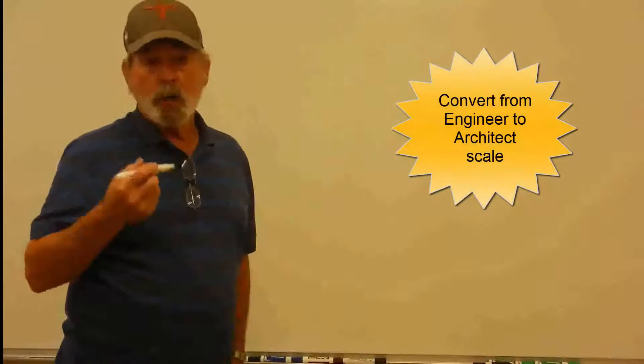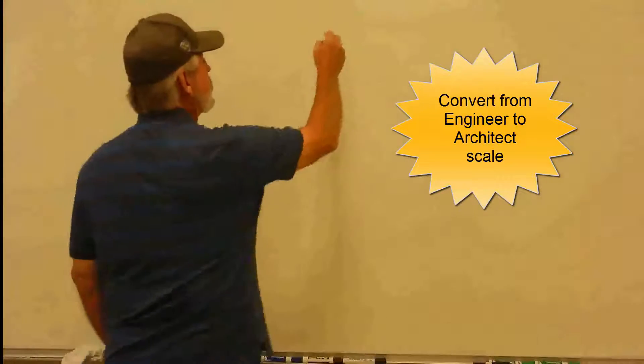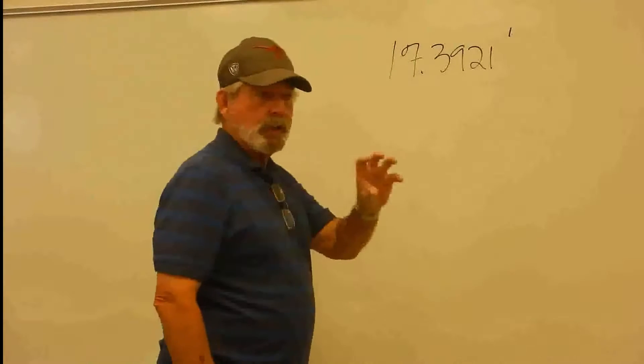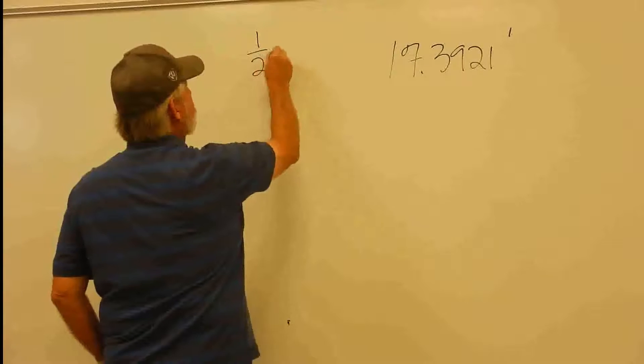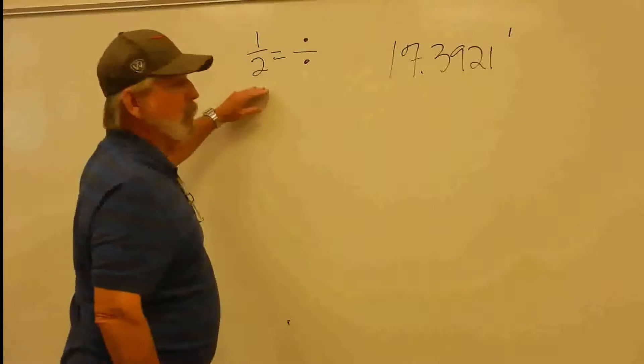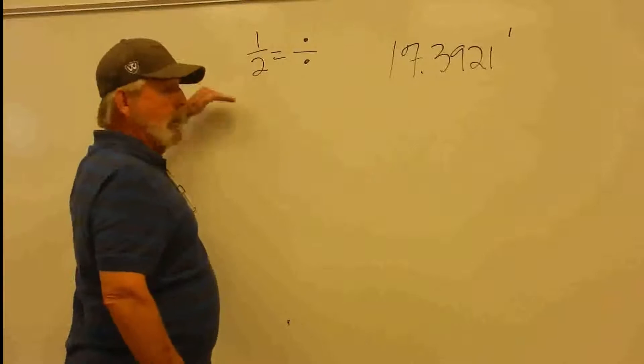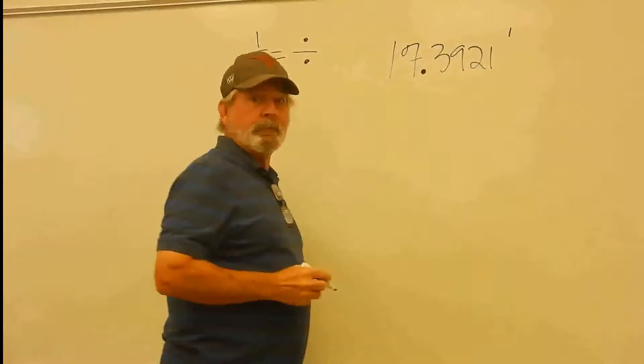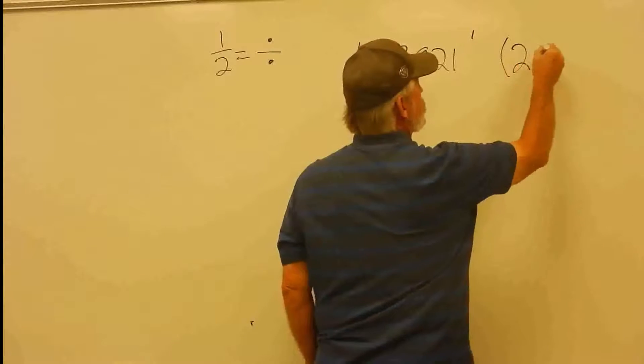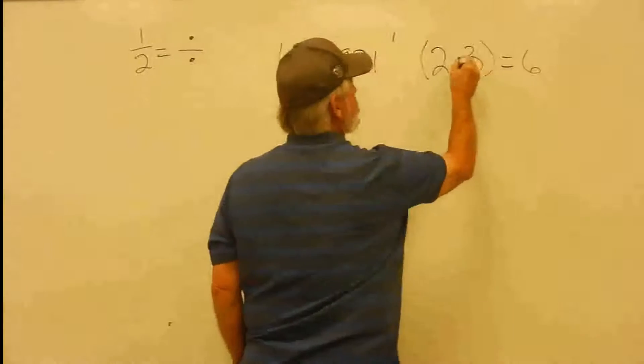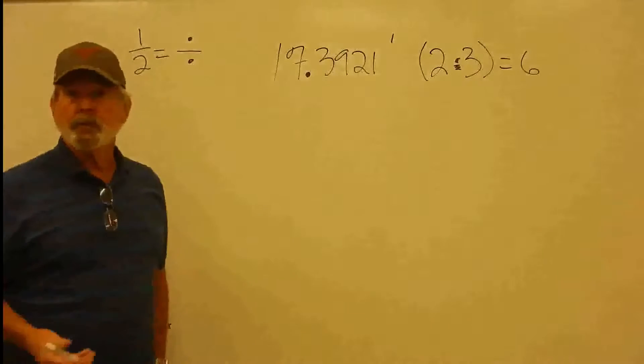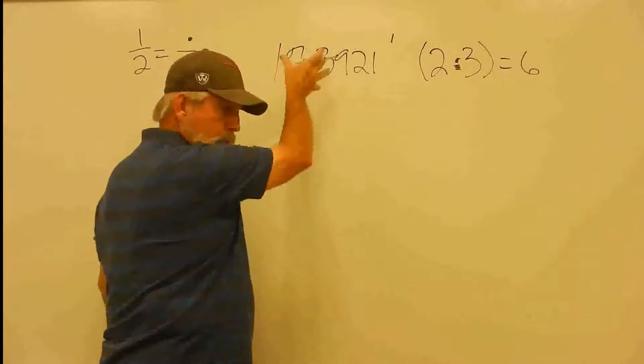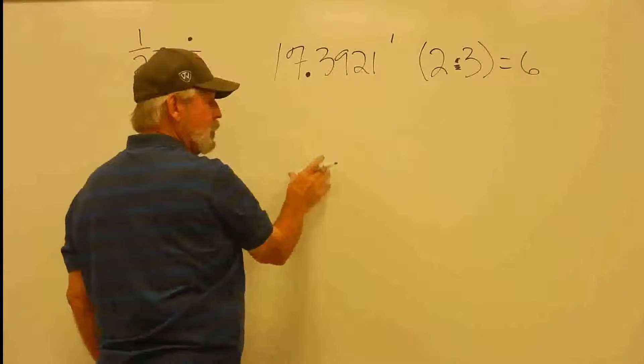So now, converting from the engineer scale to the architectural scale. Let's go ahead and do this one. The memory tools that I used from architectural to engineering is one-half. And my memory tool was division. So that means whenever I'm going through this process, every step of the way, I'm going to be using division. So my memory tool here is this little dot. If you remember back to your algebra, 2 times 3 equals 6. And this little dot right there represents multiplication. So that means this memory tool says I'm going to start with multiplying to convert this to the architectural scale. And I'm going to stay with the multiplication all the way through the process.